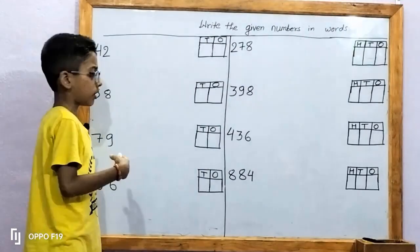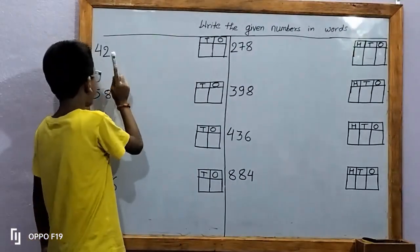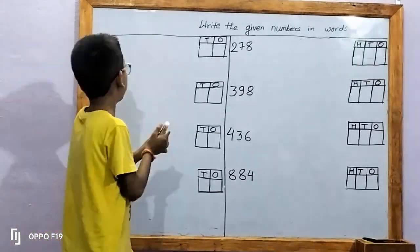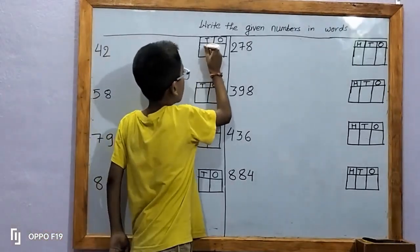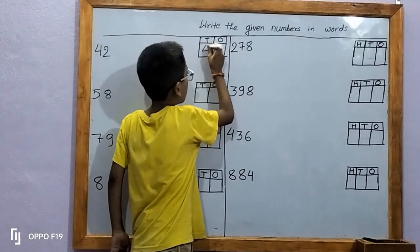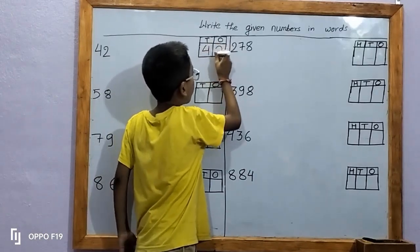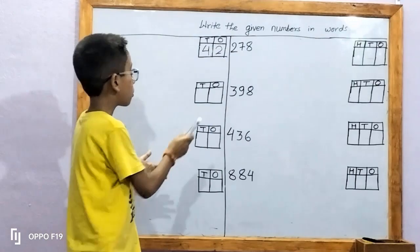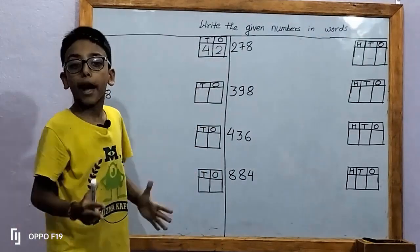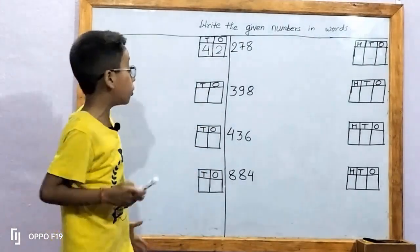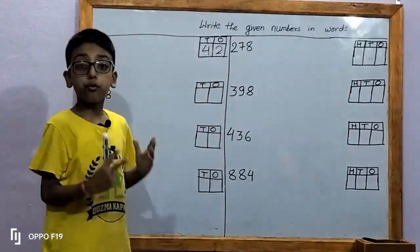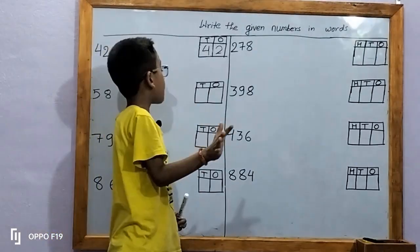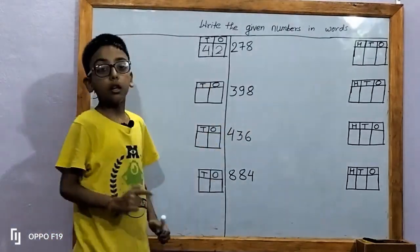In the first two-digit number, we're given four, two — that is 42. Let's write in place. Two is in one's place; two ones means two. Four is in ten's place; four tens means forty. It makes the number forty-two.